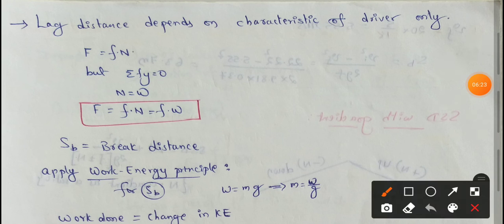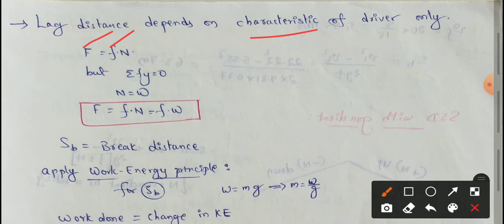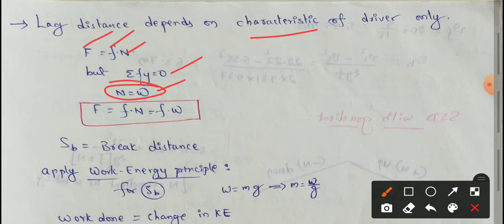Lag distance depends on the characteristics of the driver only. For friction: F = f × N, where small f is the coefficient of longitudinal friction and N is the normal (Newton) force. Since summation of forces equals zero, N = W, so F = f × W.